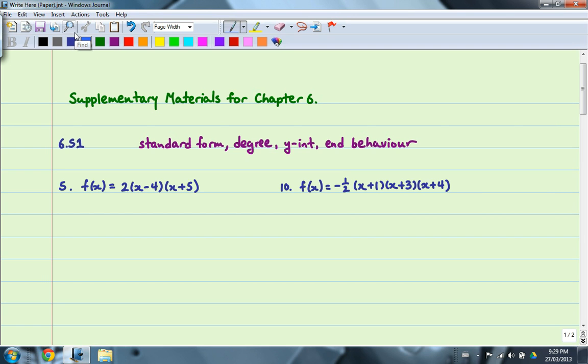So if you look at number 5, we're given 2 times bracket x minus 4 times bracket x plus 5. And as we did in class, what we want to do first is we want to use FOIL here on the two binomials. So I have the first terms multiplied together, the outside terms multiplied together, the inside terms multiplied together, and the last terms multiplied together.